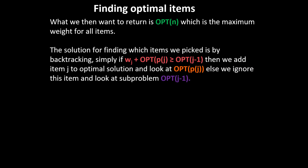One might ask: how do we find which jobs were actually picked? We use backtracking. We check if w(j) + OPT(p(j)) is greater than OPT(j−1). If taking that item results in a greater total weight, we add job j to the optimal solution and then look at OPT(p(j)). Otherwise, we ignore job j and look at the sub-problem OPT(j−1).